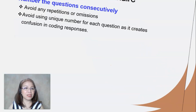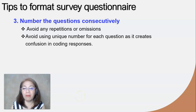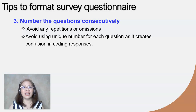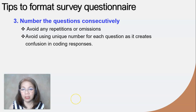The next tip is that you should number the questions consecutively. Be very particular to avoid any repetitions or omissions of the numbers, as these can cause confusion for your respondents. It is also highly encouraged to avoid using unique or non-sequential numbers for each question, because doing so will create confusion especially when you start coding the responses.